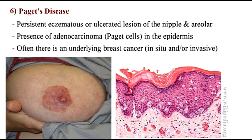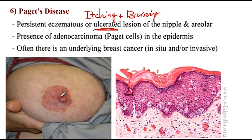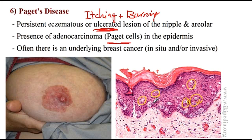Moving on to Paget's disease of the breast — this presents with itching and burning, and eczematous as well as ulcerated lesions of the nipple and areola. On histology, you will see Paget cells in the epidermis, present among surrounding keratinocytes. The final important point is that Paget's disease of the breast suggests there is probably an underlying breast disease, whether ductal carcinoma in situ or invasive cancer. That concludes our discussion of breast disorders.